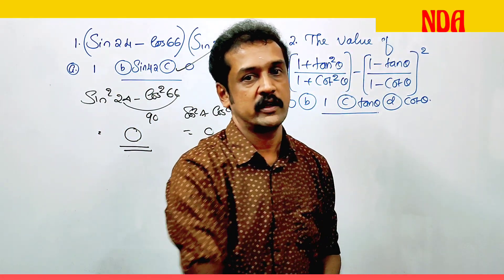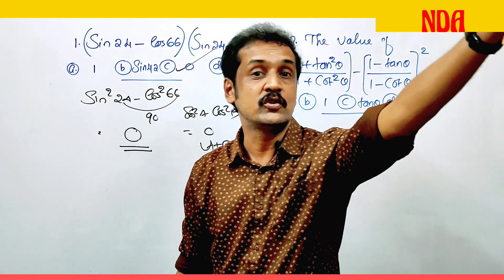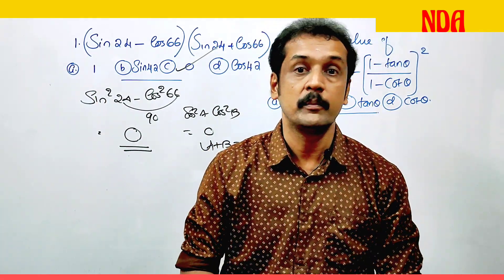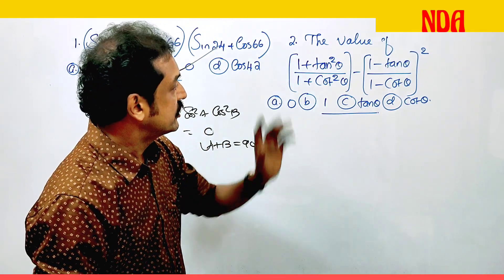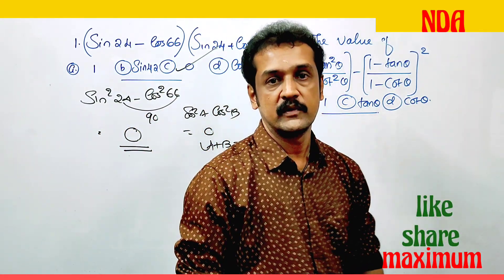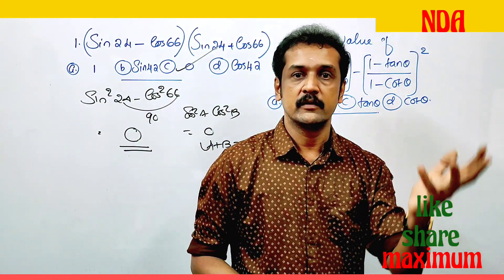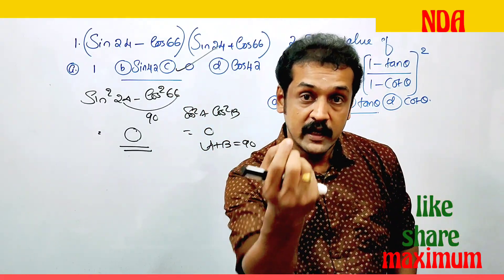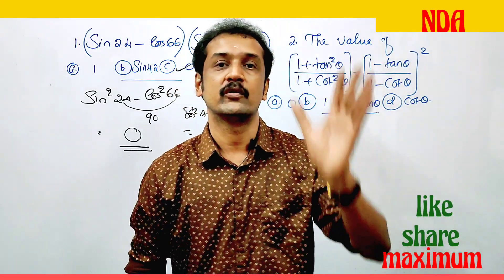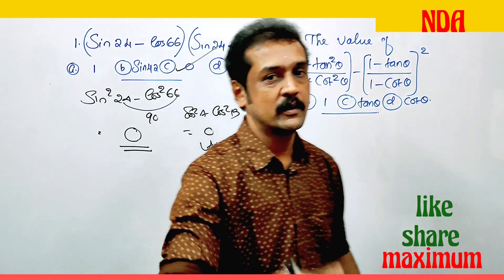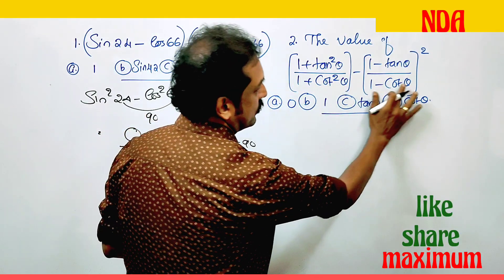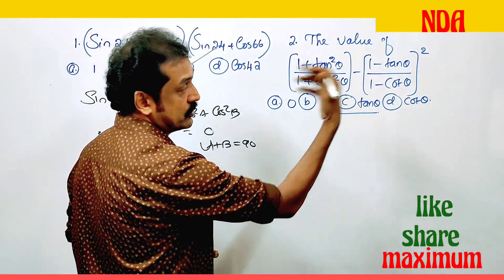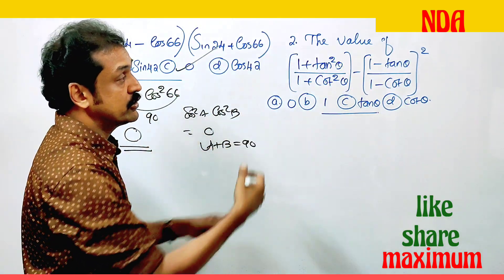The suitable method is to substitute a value. If you use 30, 45, 60, 90, or 0, you can get the value and determine the answer. Let's use theta equals 45. Then tan 45 minus 1 equals 0, which makes the value straightforward.